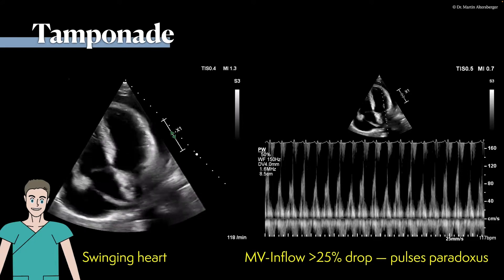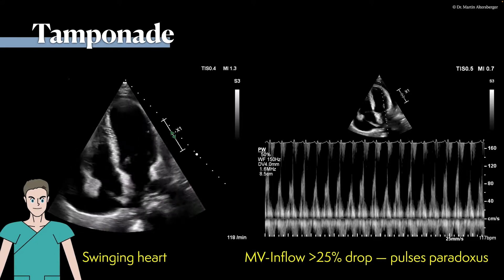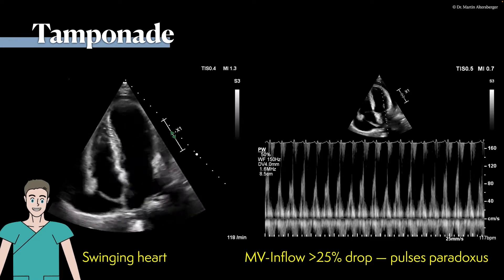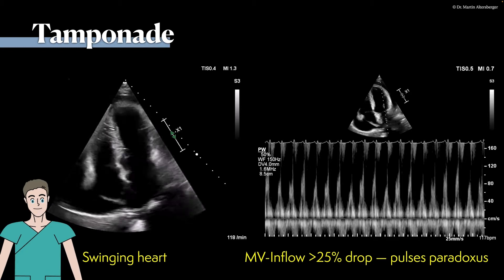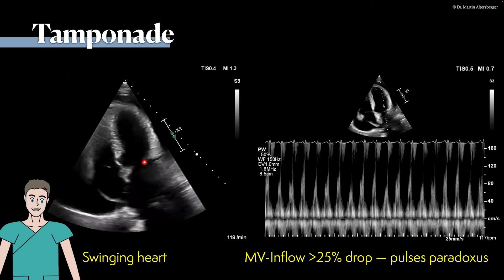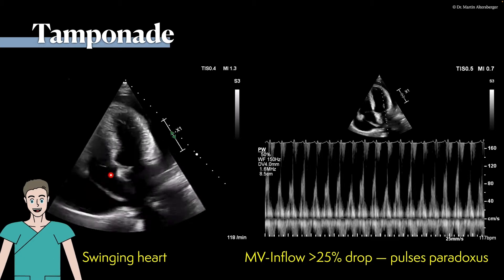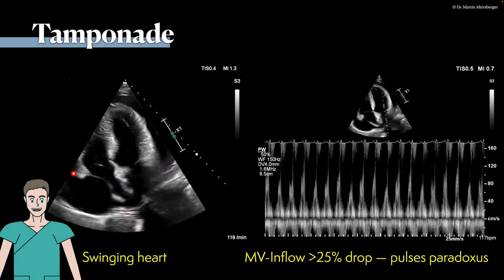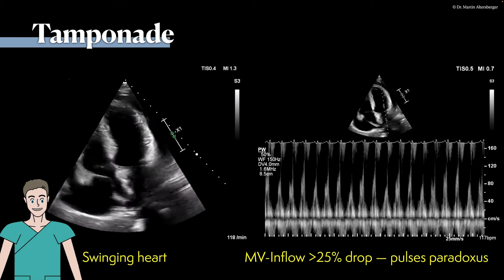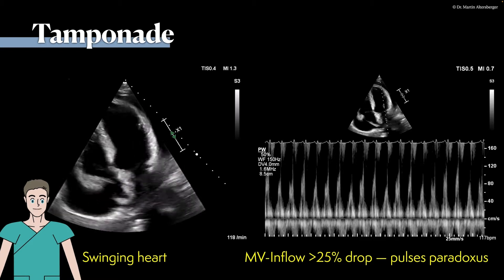I want to show you some pathological findings which you have to think about when you see a patient in an emergency situation, for example with dyspnea. In this case, we have an apical view of the heart. We see a four-chamber view: the left ventricle, the right ventricle, the right atrium, and the left atrium. It's quite striking that there is a whole lot of free fluid — a so-called swinging heart. In this case, it was a tamponade.